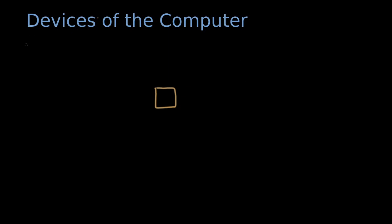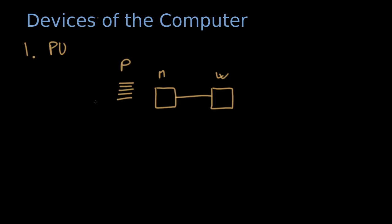Let's talk about the first device. The first device is another processing unit. Here we have our processing unit that is our basis for everything that we will do, and we will connect it to another processing unit. This is our main processing unit, and this is our working processing unit. In our main processing unit we have a program and of course some memory. Now that we have connected a processing unit, let's call it P2, to our processing unit, we get additional instructions that allow us to interact with the other processing unit.